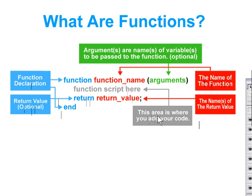The green portion here, as you can see, is the argument. The arguments are the names of variables to be passed to the function, and these are optional. So for example, if we had a function named calculate_tax, we might want to pass the amount of money to be calculated to the function — in that case that would be considered an argument.